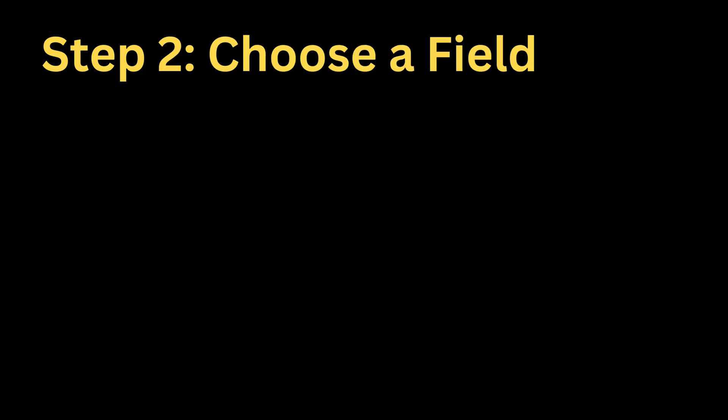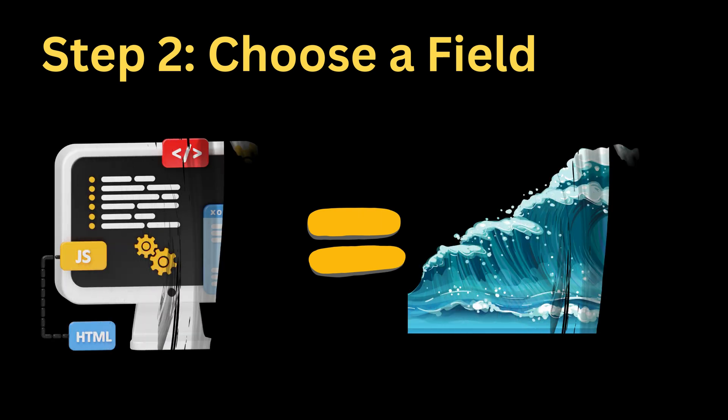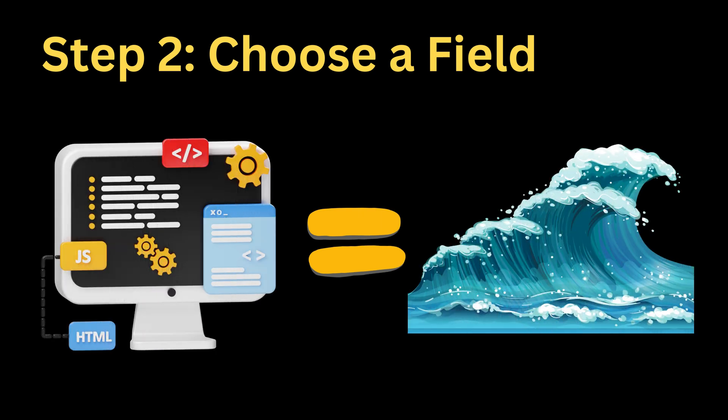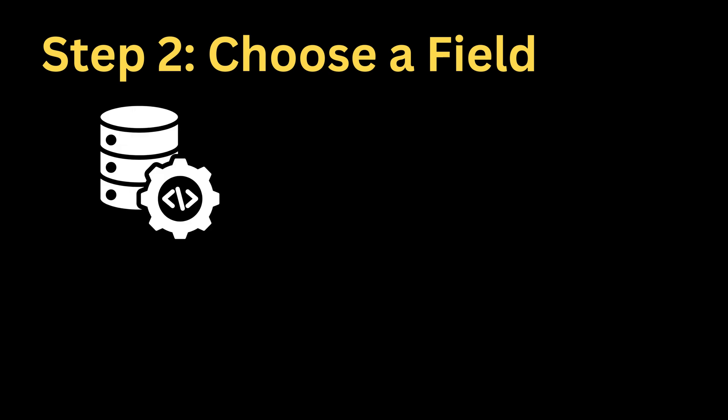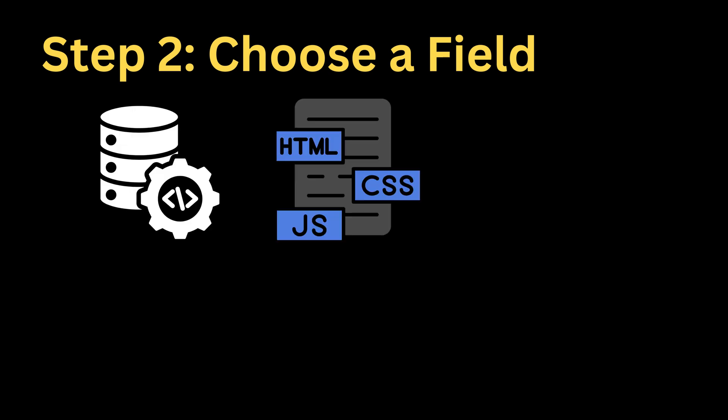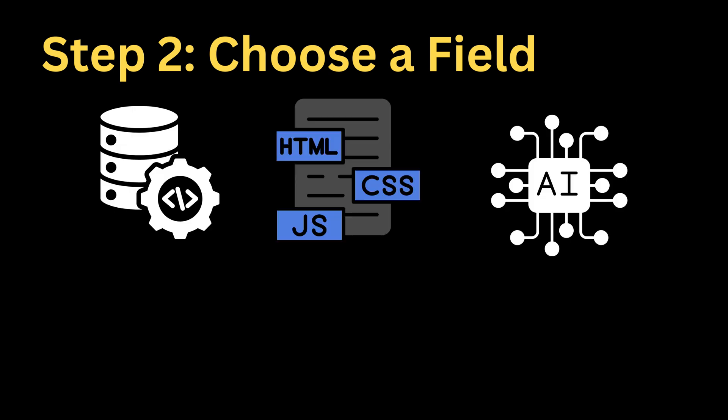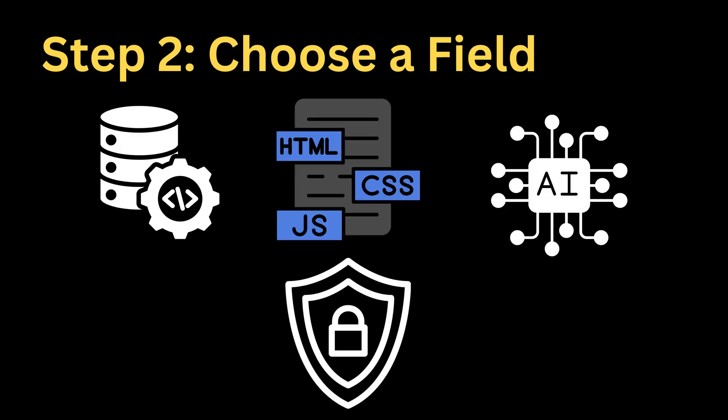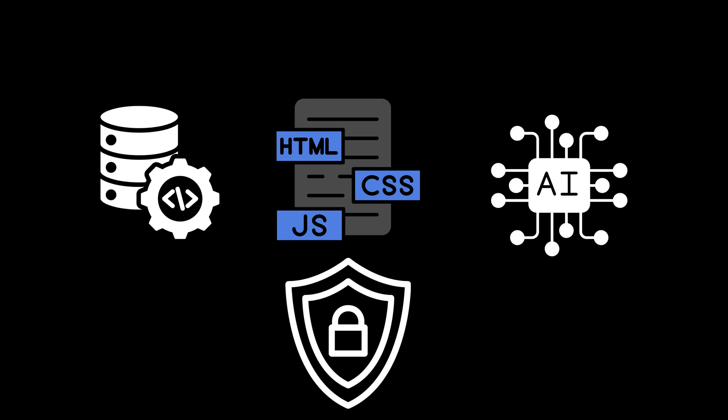In the second step, I want you to choose a field of expertise. As a computer engineer, I warn you that computer science is just as huge as an ocean. There are many fields that you can work on: back-end development, front-end development, AI and machine learning, cybersecurity, and many more. You can master multiple areas, but you need to be an expert in at least one field. After that, you can switch to another area if you want.